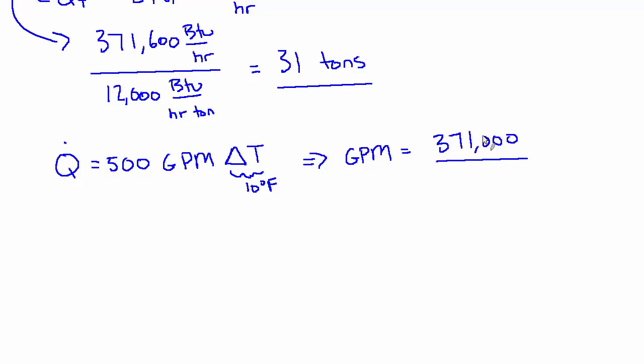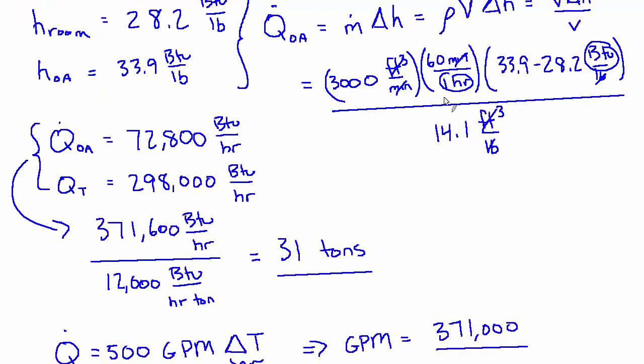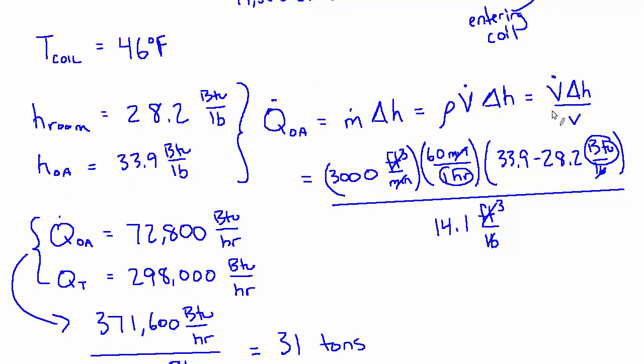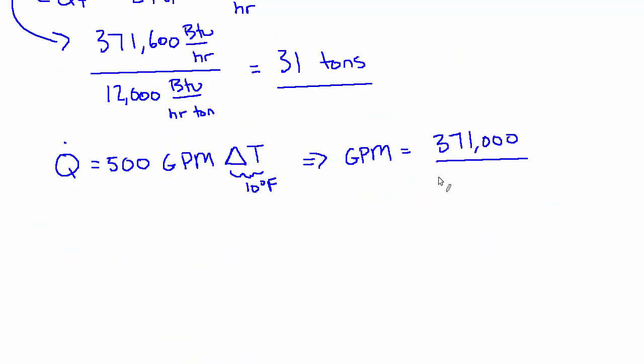That's why I don't bother to write the units when I make the substitutions, even though I'm a stickler about writing units, like what we did up here, where we're adapting a formula and then making substitutions based on something we came up with on the spot. So 371,000 over 500, and the delta T is 10. So that's 74.3 GPM.